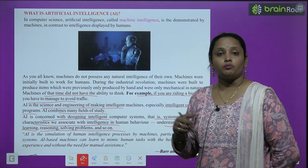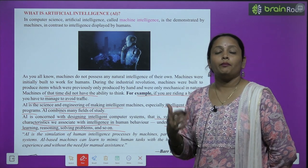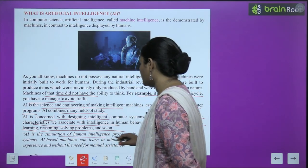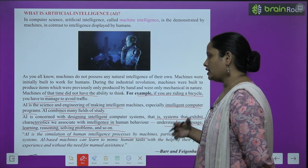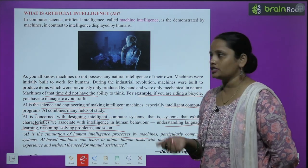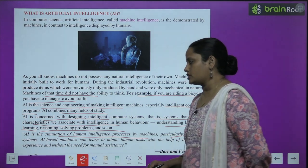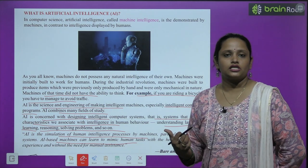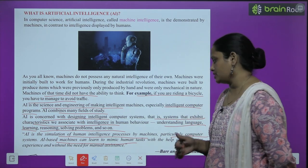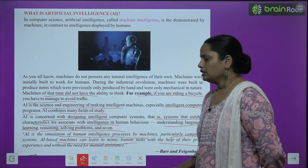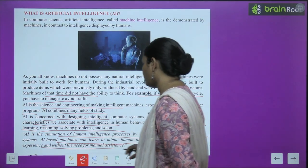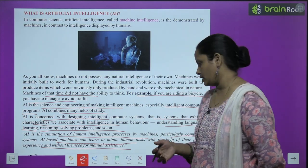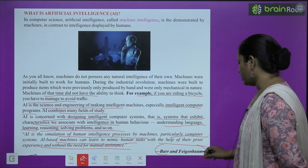Problem solving — ये सारी चीज़ें जो human beings के अंदर हैं, वो अब machines के अंदर develop की जा रही हैं। AI is a simulation of human intelligence processes by machines, particularly computer systems. AI-based machines can learn to mimic human tasks with the help of their prior experience and without the need for manual assistance. And it is said by Barr and Frank Baum.